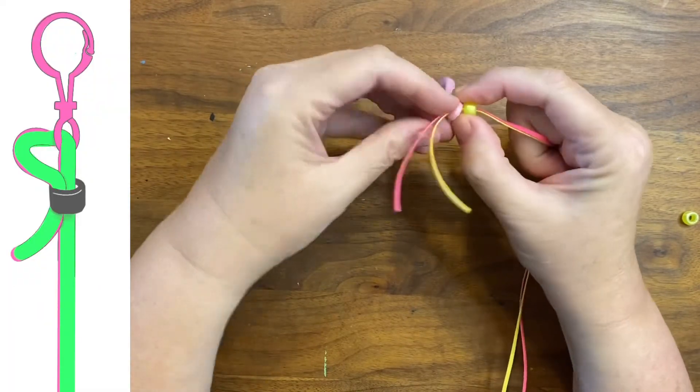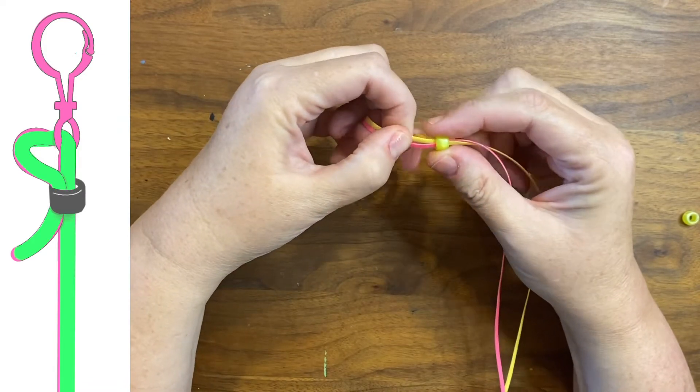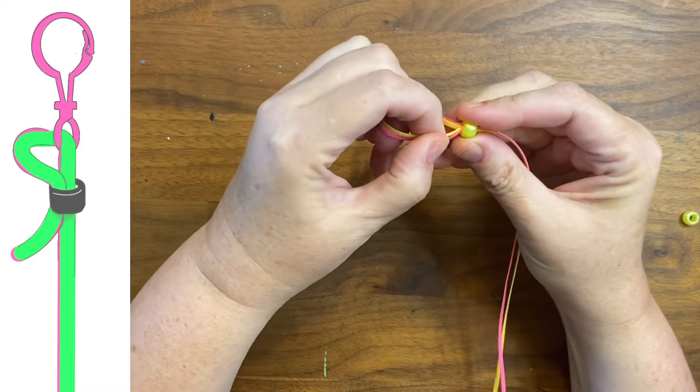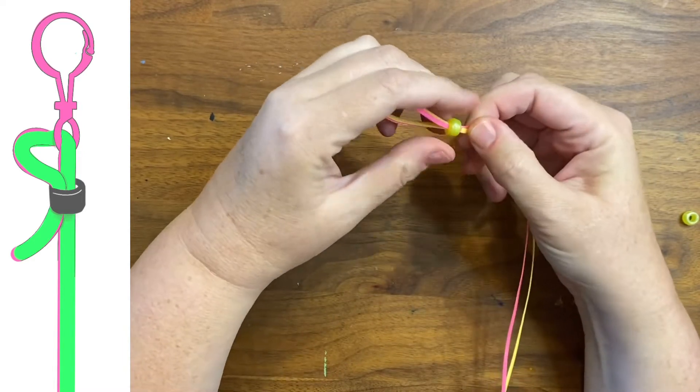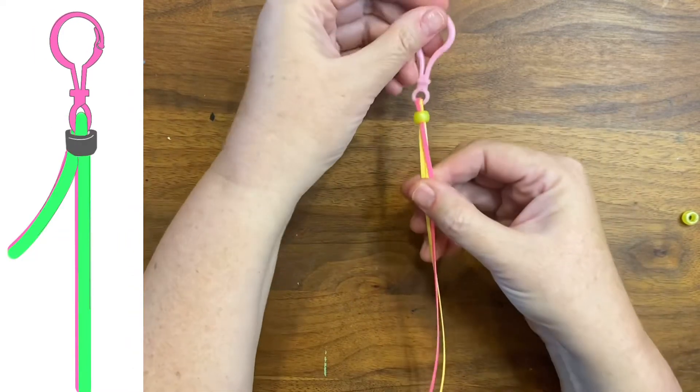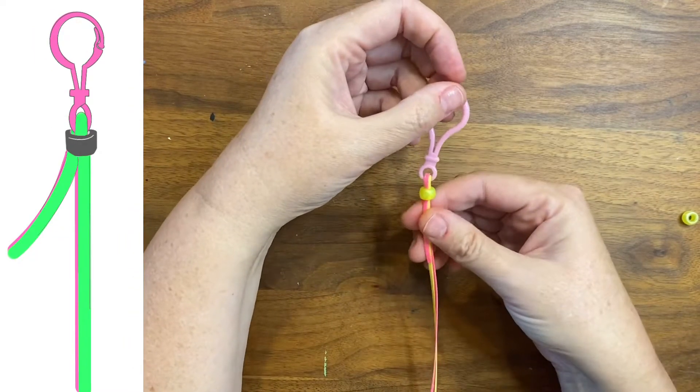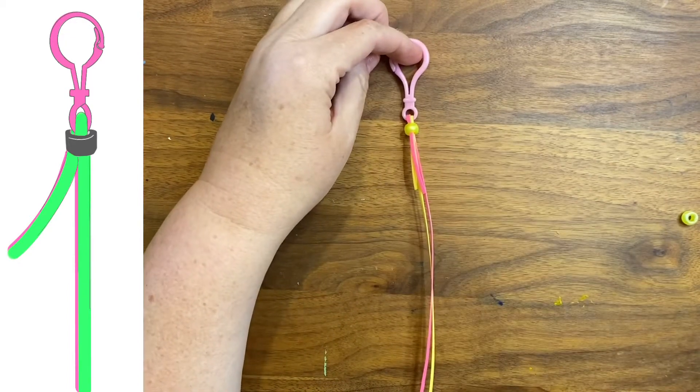From here, you'll fold your Scooby over and feed it back into the bead to secure it. Once you've done that, you'll want to slide the bead up as close to the clip as possible. This will help it to be more tight and secure.